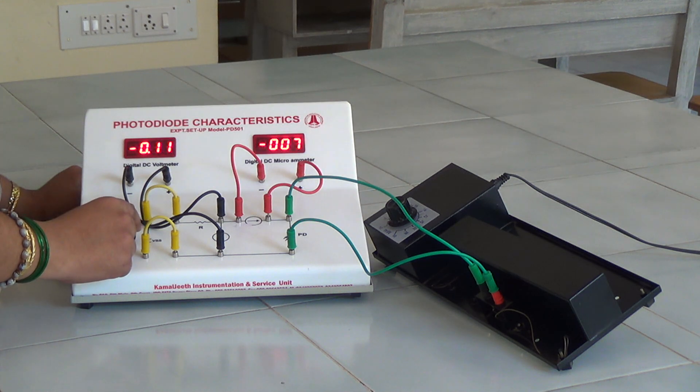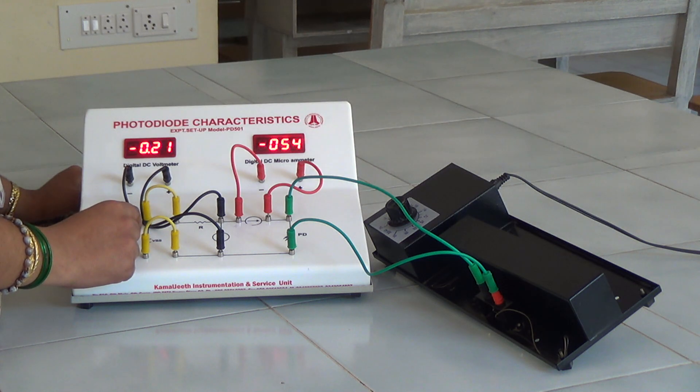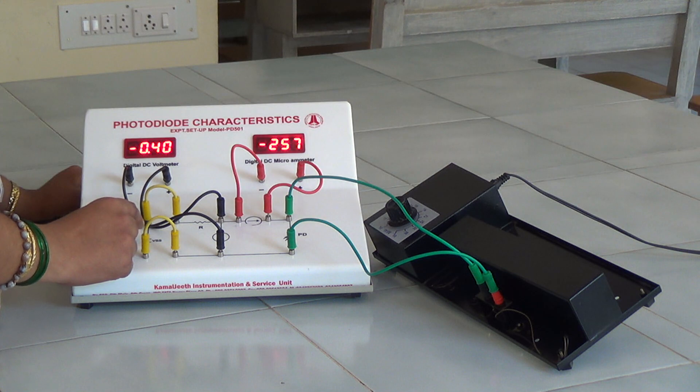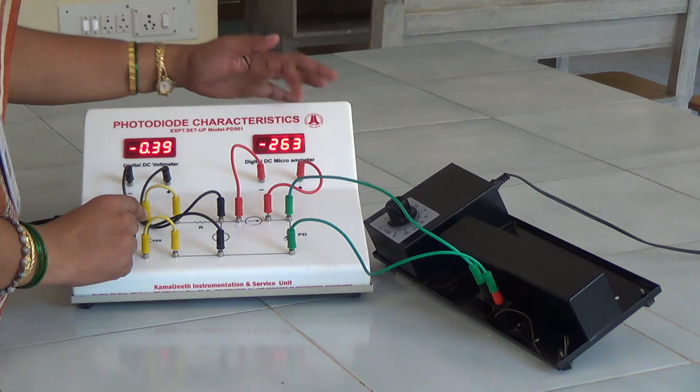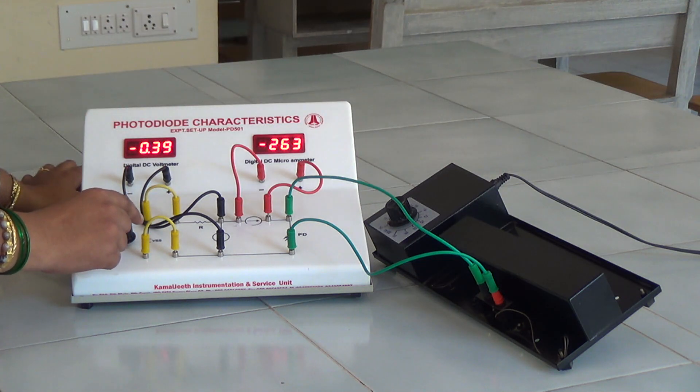And now we increase the voltage to the next value, that is 0.2 volts, and the corresponding microammeter reading is noted. Then the voltmeter is set to the next value that is 0.3 volts. The corresponding microammeter reading is noted. And then it is set to 0.4 and the microammeter reading which is minus 264 is noted in the tabular column.